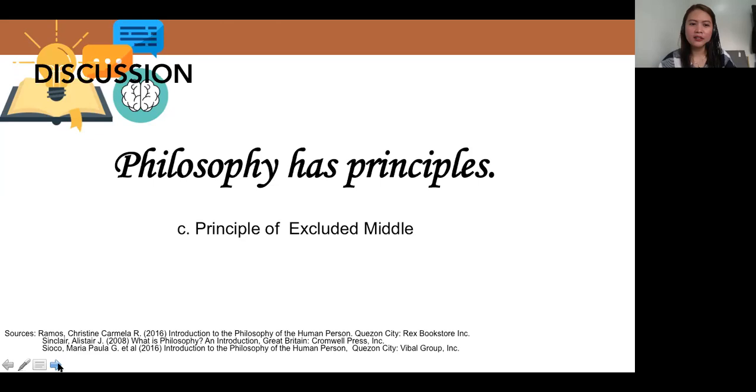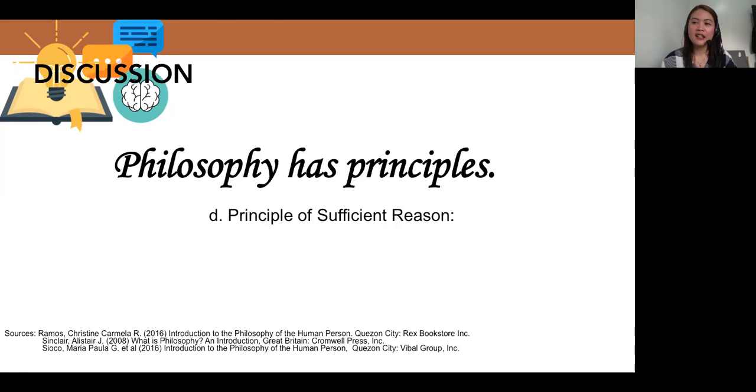Principle of excluded middle. A thing is either or not. Everything must be either or not. Between being and not being, there is no middle ground possible. So it's either exists or not exists.